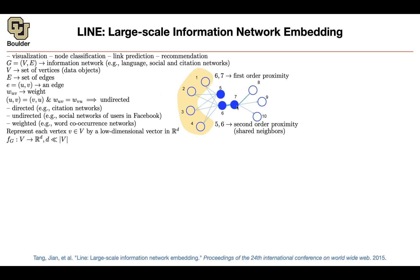This concept is very important for LINE. You can have first-order proximity — six and seven are first-order close because there is a direct edge between them. Five and six are second-order close because they are not directly connected but have shared neighbors. Now you want to write an objective encoding both first-order and second-order proximity.